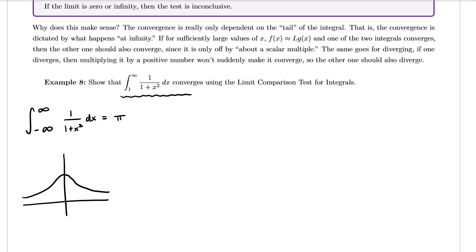If we graph 1 over (1 + x²) from negative infinity to positive infinity and take the area underneath that curve, we found that area was pi. So if we are now taking the same integral but integrating from 1 to infinity, and the area from negative infinity to positive infinity was a finite number, making the interval smaller should also give a finite number smaller than pi. That's a quick tip — let's go ahead and use the limit comparison test now.